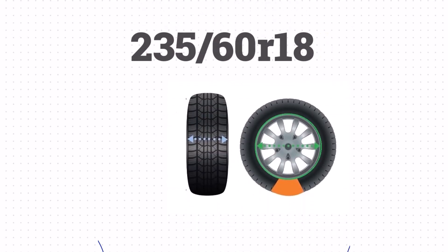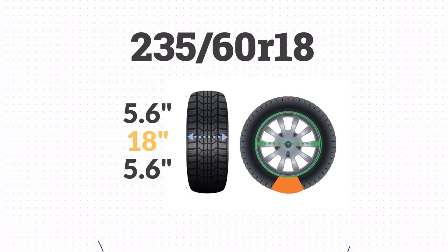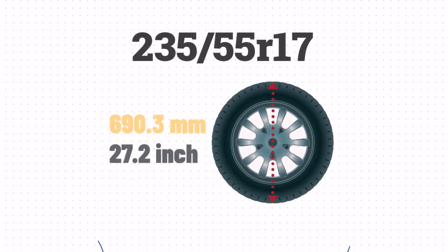Now that we've got the width, sidewall size, and wheel size, we can take all that together to get the height of the tire. We'll take the sidewall size of 5.6 inches, add the wheel size of 18 inches, and then add the sidewall size one more time. This gives us a total height of 29.1 inches.